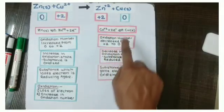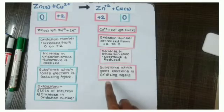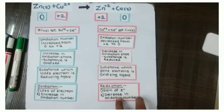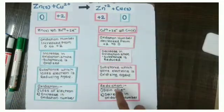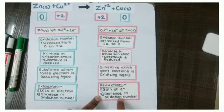So here Cu²⁺ has gained electrons and converted into copper solid. That means it has gained the electron and it is an oxidizing agent. Now if you look at this overall reaction, it is called a reduction reaction because there is gain of electron and also decrease in oxidation number.